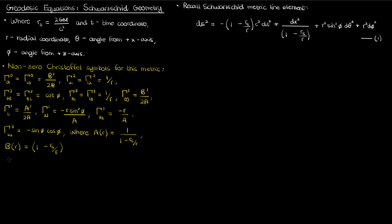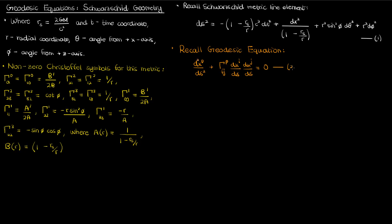To derive the geodesic equations for the Schwarzschild metric, let's go back to the general geodesic equation derived in my tensor calculus series. I've put the link in the description if you want a refresher. I'll call this equation 2.